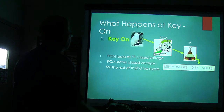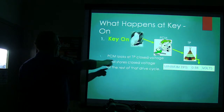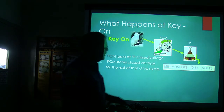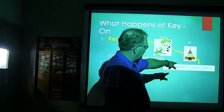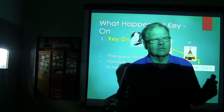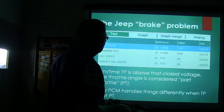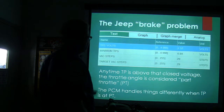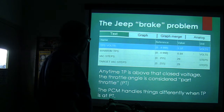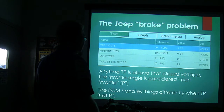At key-on, the PCM looks at throttle position closed voltage and stores that closed voltage for the rest of that drive cycle — the minimum TPS was 0.84. Anytime the TP is above that closed voltage, the throttle angle is considered at part throttle, and the system handles things differently than when throttle position is truly closed.